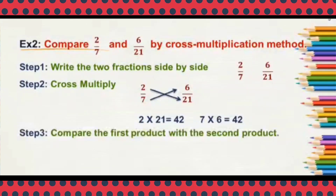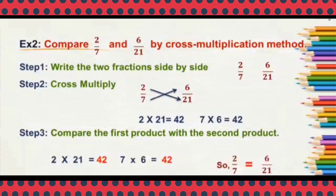Next step: compare the first product with the second product. When you compare, both products are 42 — 42 is equal to 42. That means 2 by 7 is equal to 6 by 21. This is how we compare unlike fractions by cross multiplication method.